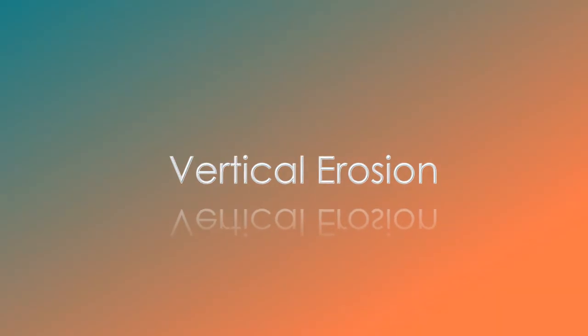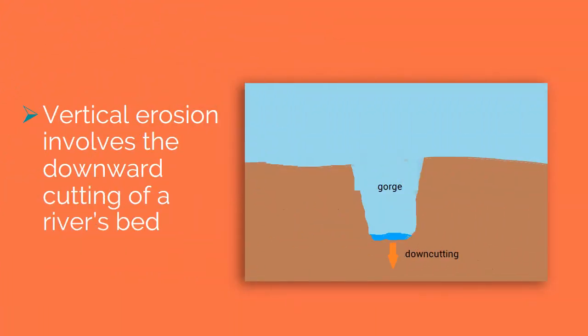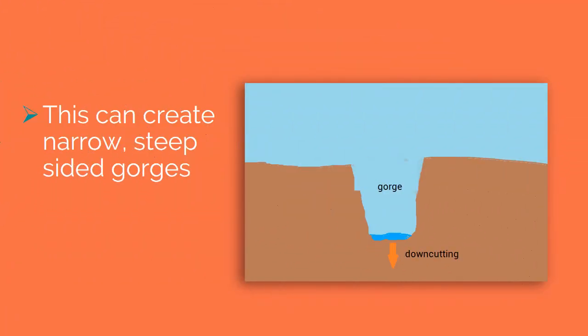Vertical erosion involves the downcutting of a river's bed. This can create narrow, steep-sided gorges.